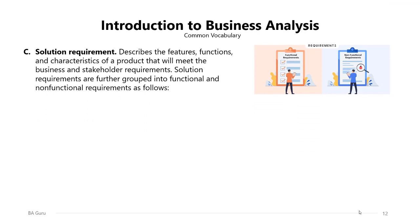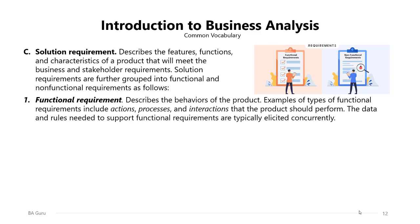The third type is solution requirements, which describes the features, functions, and characteristics of a product that will meet the business and stakeholder requirements. Solution requirements are further grouped into functional and non-functional requirements. Functional requirements describe the behaviors of the product — examples include actions, processes, and interactions that the product should perform. The data and rules needed to support functional requirements are typically elicited concurrently.